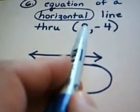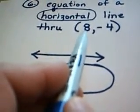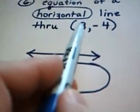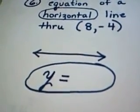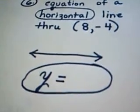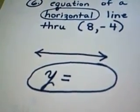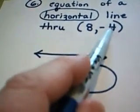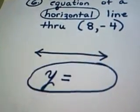Well, we're told that this line passes through the ordered pair 8, negative 4. 8 is an x value, so that is not important to us on a horizontal line. The value that's important to us, the one that's stable, is the y value, which in this case would be negative 4.